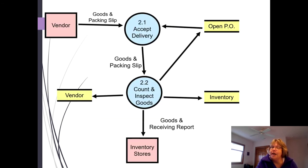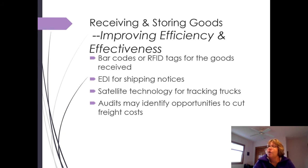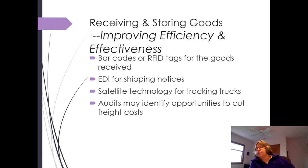In the data flow diagram there are really two steps: we accept the delivery, then we count and inspect the goods and send them over to inventory stores. To make things more efficient: barcodes and RFID tags for all goods help track things more accurately in data entry. We also want EDI for shipping notices so we know when goods are going to come in — you should expect this truck between 10 and 11 on Tuesday morning. Satellite technology will also do that, but a lot more precisely.